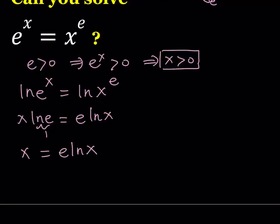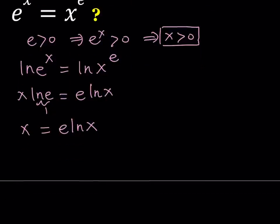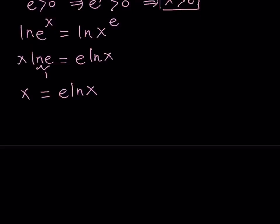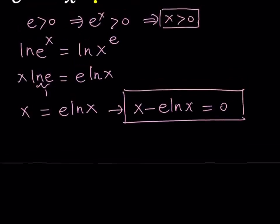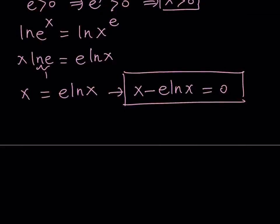This equation is non-standard because we have logarithms on one side and a linear function on the other side — by no means a standard equation. We have to use a non-standard method here. Let's put everything on the same side and write this as x minus e·ln(x) equals 0. This equation has the same domain as before because the ln function is only defined for positive x values, so x greater than 0 still holds.